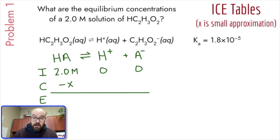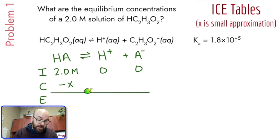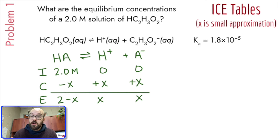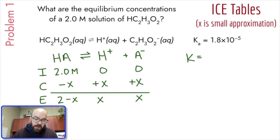HA is going to decrease by some variable — we don't know how much — so we put minus X. It's a 1-to-1-to-1 ratio, so the change for the ions is plus X and plus X. Writing our equilibrium row: 2 minus X, X, and X. Our equilibrium amounts are there, but with X unknown we still need to solve for the actual concentrations, which we do by setting up our K expression.